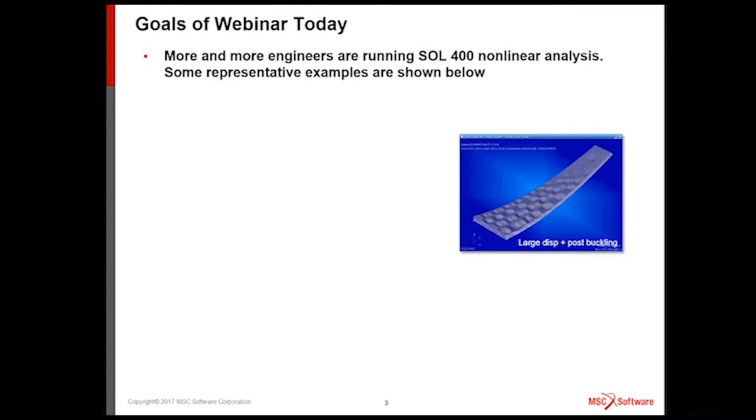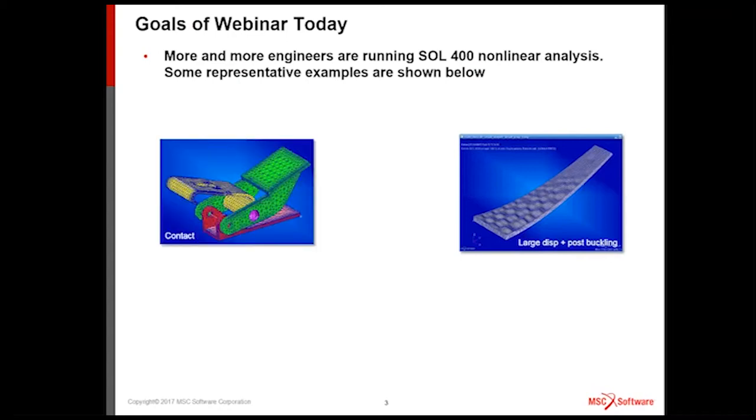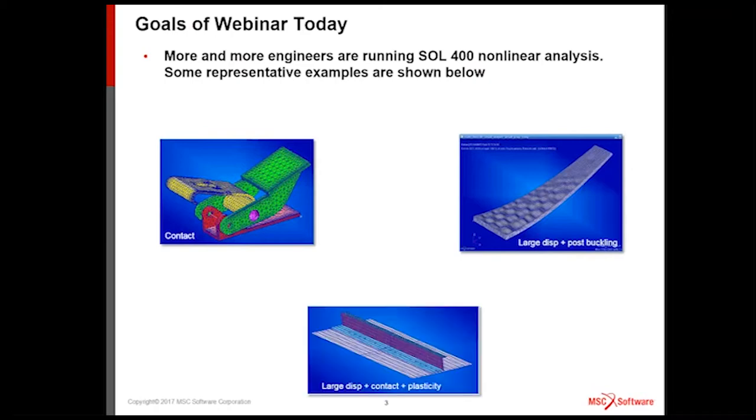We're seeing people running large analysis, geometric nonlinear, showing this green box example. A lot of people running compacts are showing this latch example here. Some users are combining all three: large displacement, compact, plus metal plasticity. All these three types of problems have one thing in common. They're nonlinear, so it's going to take multiple load increments and multiple iterations to solve them.